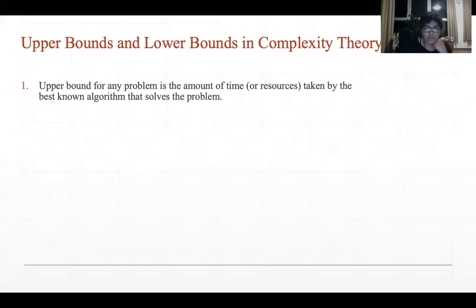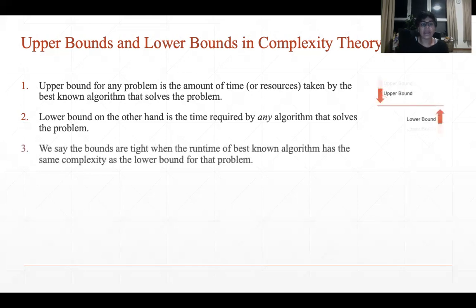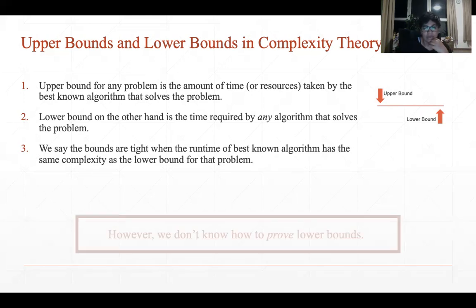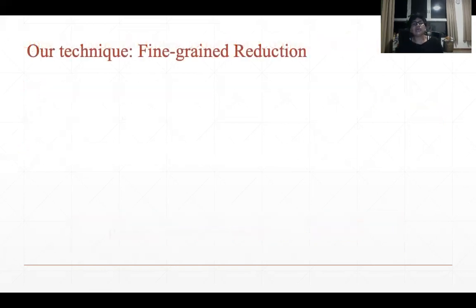Suppose you have a computational problem and someone says there's an upper bound for this problem. An upper bound is just the runtime of the best algorithm that solves the problem. A lower bound, on the other hand, is the time required for any algorithm that solves the problem. We say the bounds are tight — that the upper bound is the best algorithm — when the upper bound and lower bound match. But the unfortunate situation is that we do not know how to prove lower bounds in general.